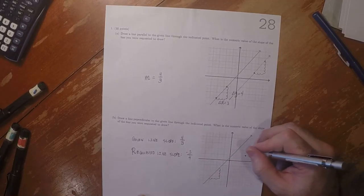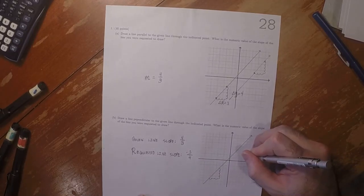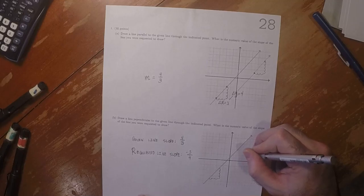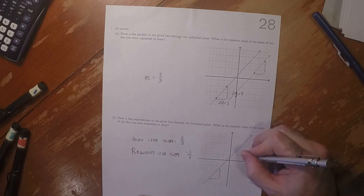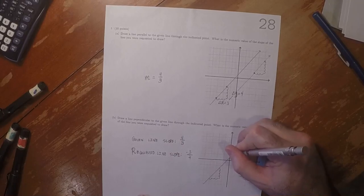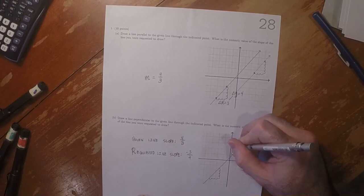So, then we need to do... negative three over four, so that could be something like this. One, two, three, four. And then, one, two, three.